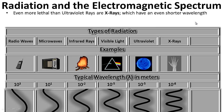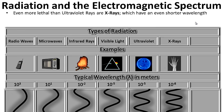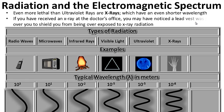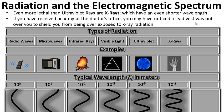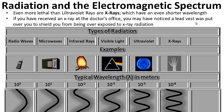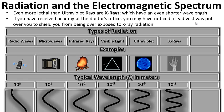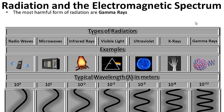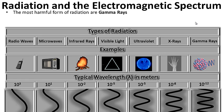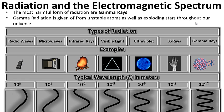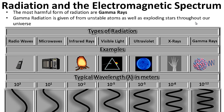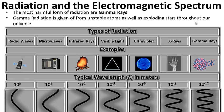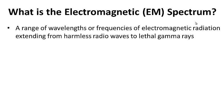Even more lethal than ultraviolet rays are X-rays, which have an even shorter wavelength. Too much exposure to ultraviolet rays from the sun can cause skin cancer. If you've ever received an X-ray at the doctor's office, you may have noticed a lead vest was put over you to shield you from overexposure. And finally, the most harmful form of radiation are gamma rays — gamma radiation is given off from unstable atoms as well as exploding stars throughout our universe. For your notes, what is the electromagnetic spectrum or EM spectrum? Question on the left, answer on the right.